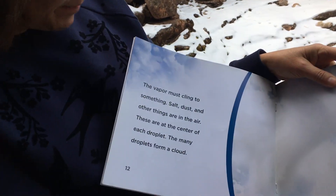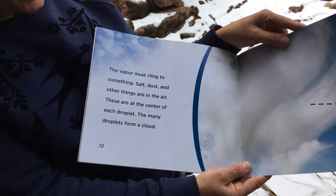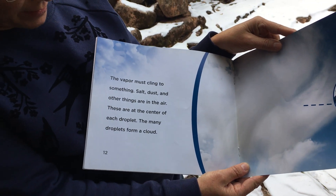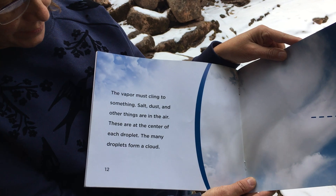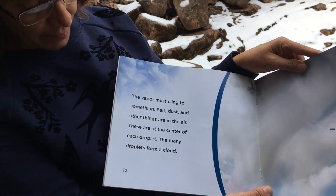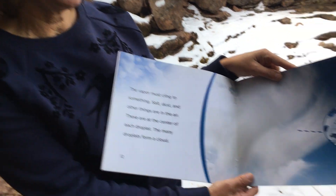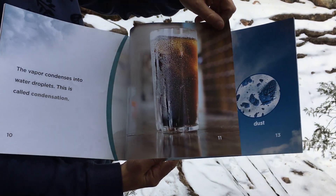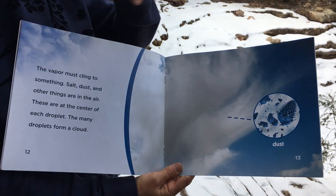The vapor must cling to something. Salt, dust, and other things are in the air. These are at the center of each droplet. The many droplets form a cloud, just like the cloud you saw on this glass — the cloud starting to form.